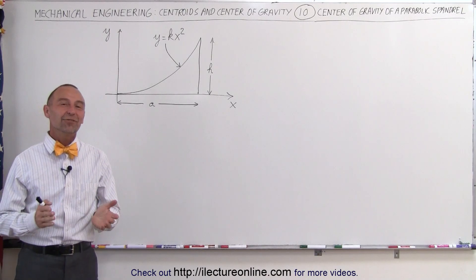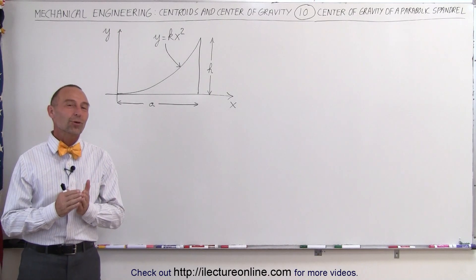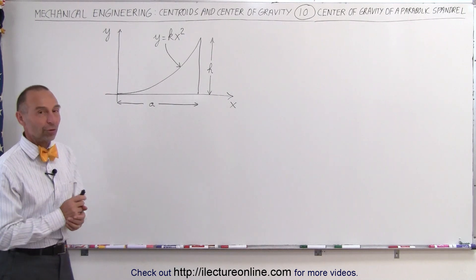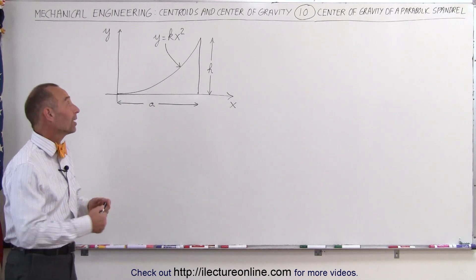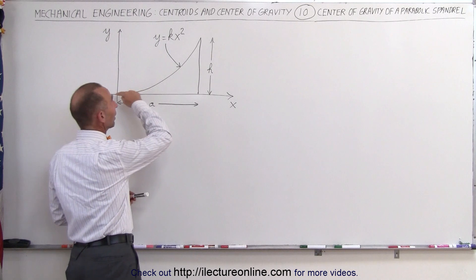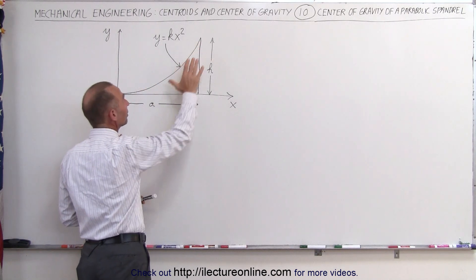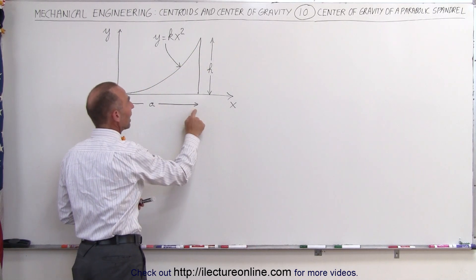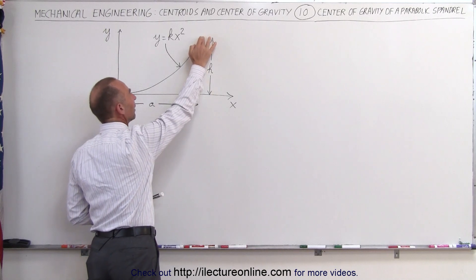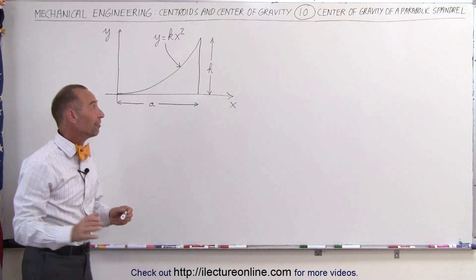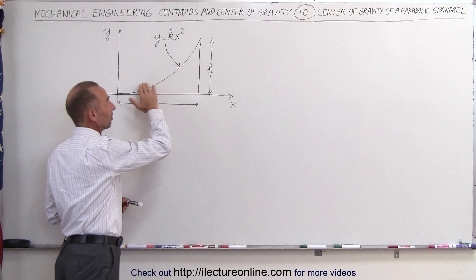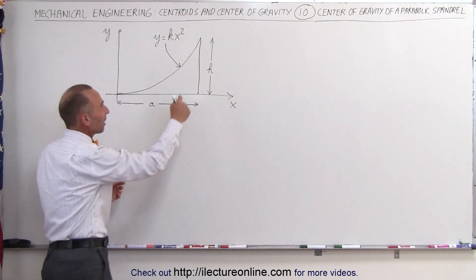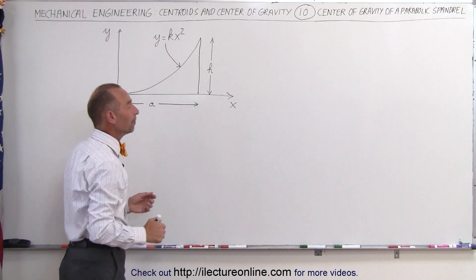Welcome to ElectronLine. In this video we're going to show you how to find the center of gravity of the parabolic spandrel. Basically what it is, it's a parabolic equation y equals k times x squared, and we cut it off at some distance x equals a, and we let it go to some height y equals h, and then we want to find the center of mass or center of gravity of this portion right here. We can imagine that somewhere in this region.